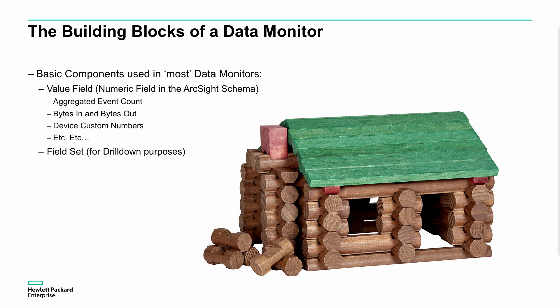Let's look at the building blocks for a data monitor. In most data monitors, we're going to be looking at some sort of value field. That's typically going to be a number field in the event schema itself. It could be things like aggregated event count, bytes in, bytes out, a custom number and so on. So typically we're looking to aggregate on a number so we can do a calculation. And then we typically want to use a field set of how we want to drill down and look at those events specifically.